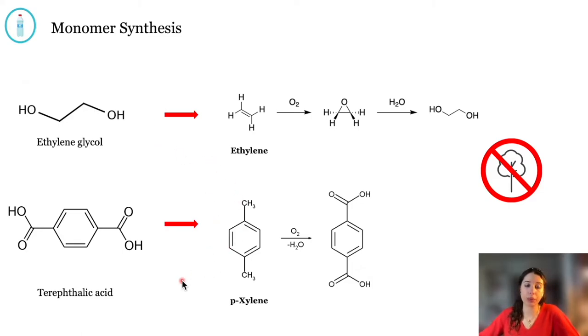PET is formed from two repeating monomers, ethylene glycol and terephthalic acid, none of which are found in nature and must therefore be synthesized from other compounds.